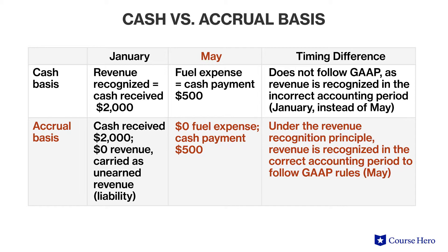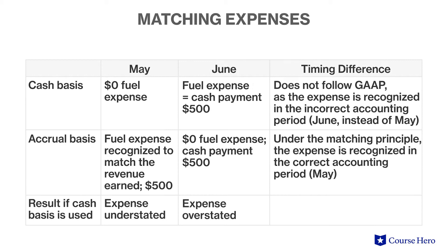By recognizing the flight revenue in May, Global Air follows the revenue recognition principle under GAAP, which is the principle on which the adjusting process is based. It recognizes revenue in the time period when earned, regardless of when the cash is received. Taking the example further, suppose that Global Air purchases and uses $500 in fuel to fly the aircraft from Toronto to Reykjavik in May and pays the invoice for that fuel purchase in June. Under the cash basis method of accounting, the $500 expense would be recognized in June.